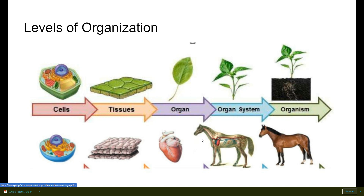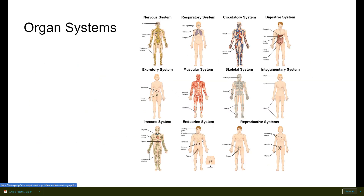The levels of organization in the human body start at the molecular level, which is even below cells. Then we talk about cells and tissues — cells make up tissues, tissues make up organs. We will be looking at the systems of the body, and there are 12 different systems that we will spend time on in this class.